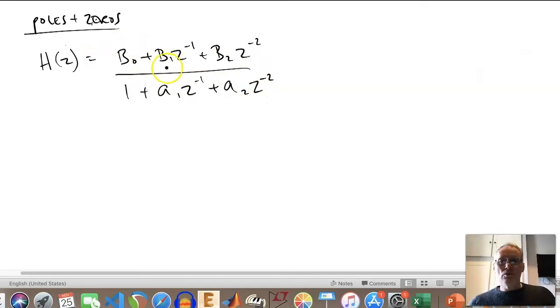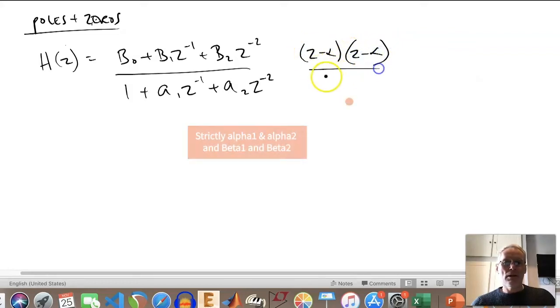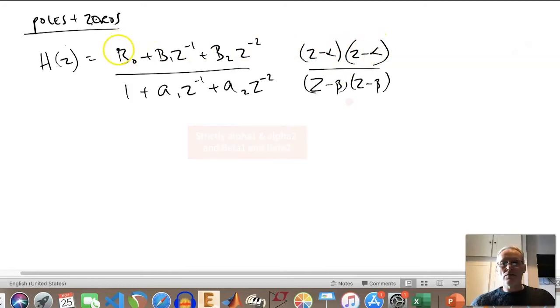What we could do is express the numerator and denominator in terms of the roots of these polynomials. So what do we mean by that? Well, if we were to express top and bottom by something like (z - α₁)(z - α₂) and (z - β₁)(z - β₂), we multiply these together and we get a z² term, a z term, and a constant.